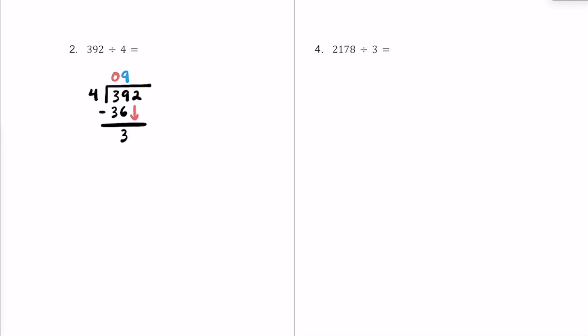Let's take this 2 and bring it down to join that 3 to make 32, and repeat the process. How many times does 4 fit into 32? 4 times 8 is exactly 32, so we put an 8 up here. We have a remainder of 0, so the quotient — the answer — is going to be 98.